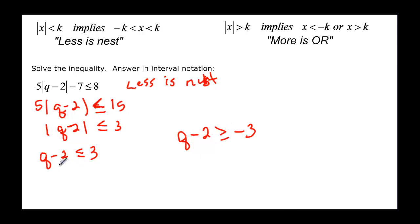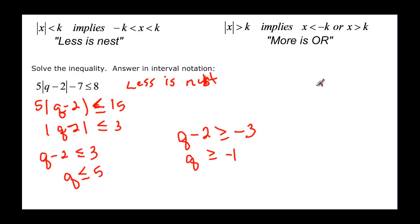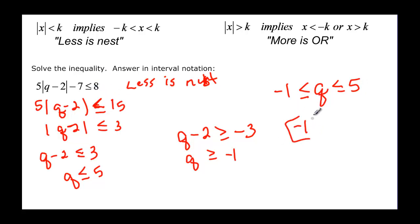Drop the absolute value and write the inequality you see. Then multiply negative 1 by 3, and since we multiply by a negative, we switch the inequality. Adding 2, q is less than or equal to 5. Adding 2 on the other side, q is greater than or equal to negative 1. Negative 1 is the smallest value, 5 is the largest, so it really did nest. In interval notation, that's negative 1 bracket to 5 bracket — q is between negative 1 and 5.